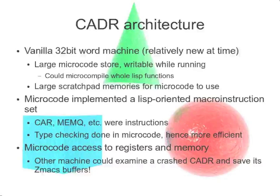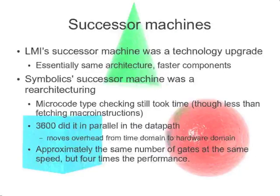You could take your inner loop of some computation and compile it directly into the microcode. The other really cool thing about the CADR was that when it was halted — not fetching macro instructions but still powered on — you could access its memory through parallel cables from another machine. So you had a debugger on another CADR that could look at the stack, poke around in memory, figure out why you crashed, find your Emacs modified buffers and write them out — which was pretty amazing.